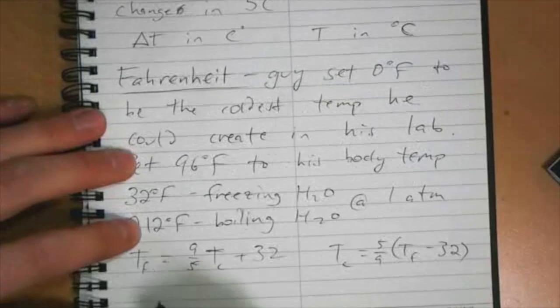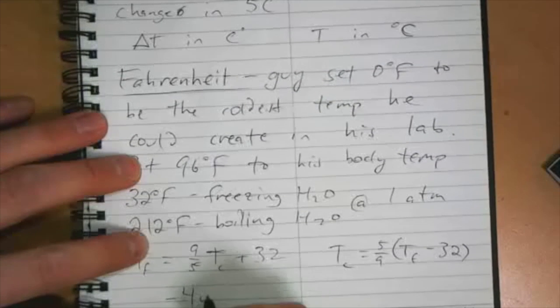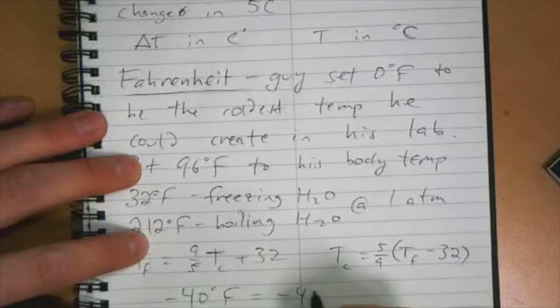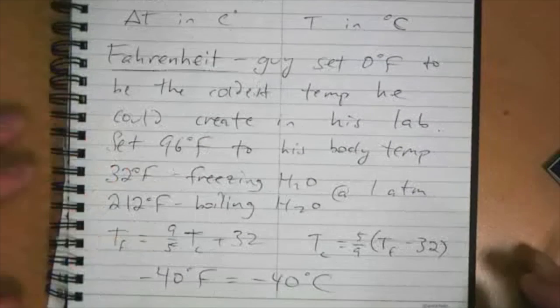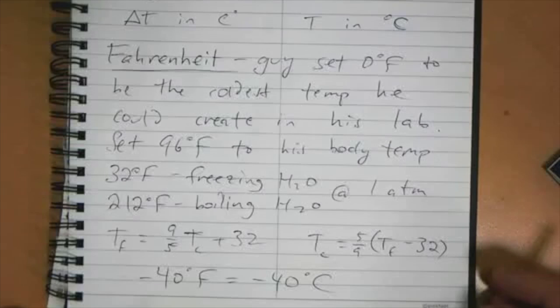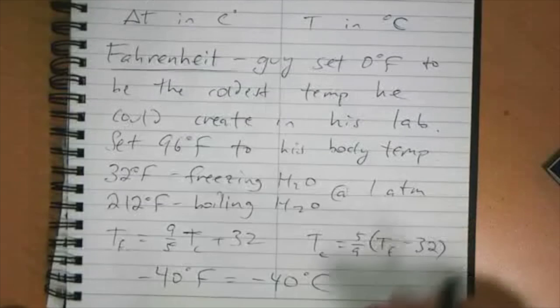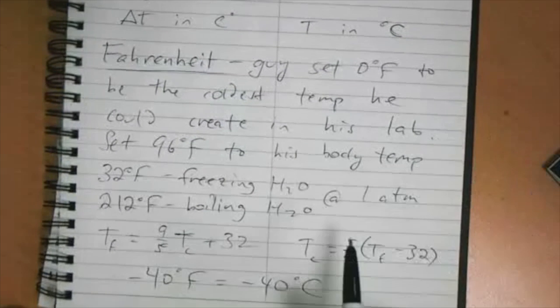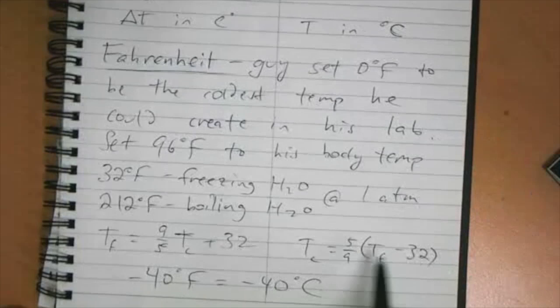Random fact: when you get to minus 40 degrees, it doesn't matter where you are in the world. If you say it's minus 40 degrees, it's minus 40 degrees, because that's where Fahrenheit and Celsius are equal to each other. If you take minus 40 times 9/5 plus 32, you get minus 40. And the same thing here.